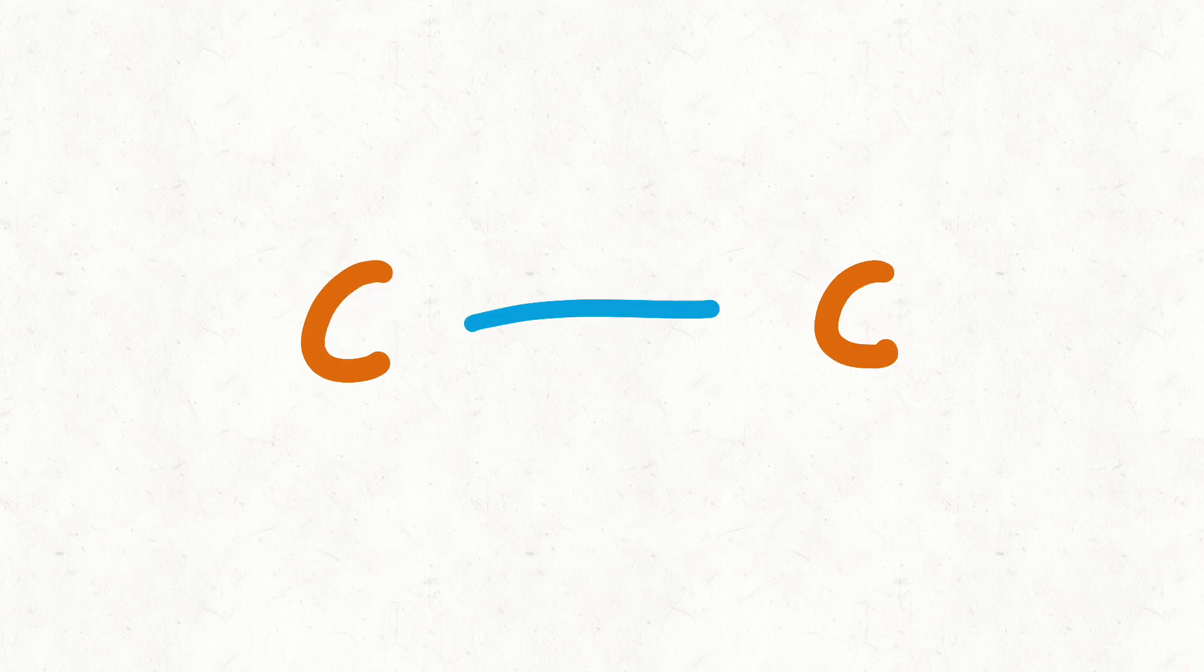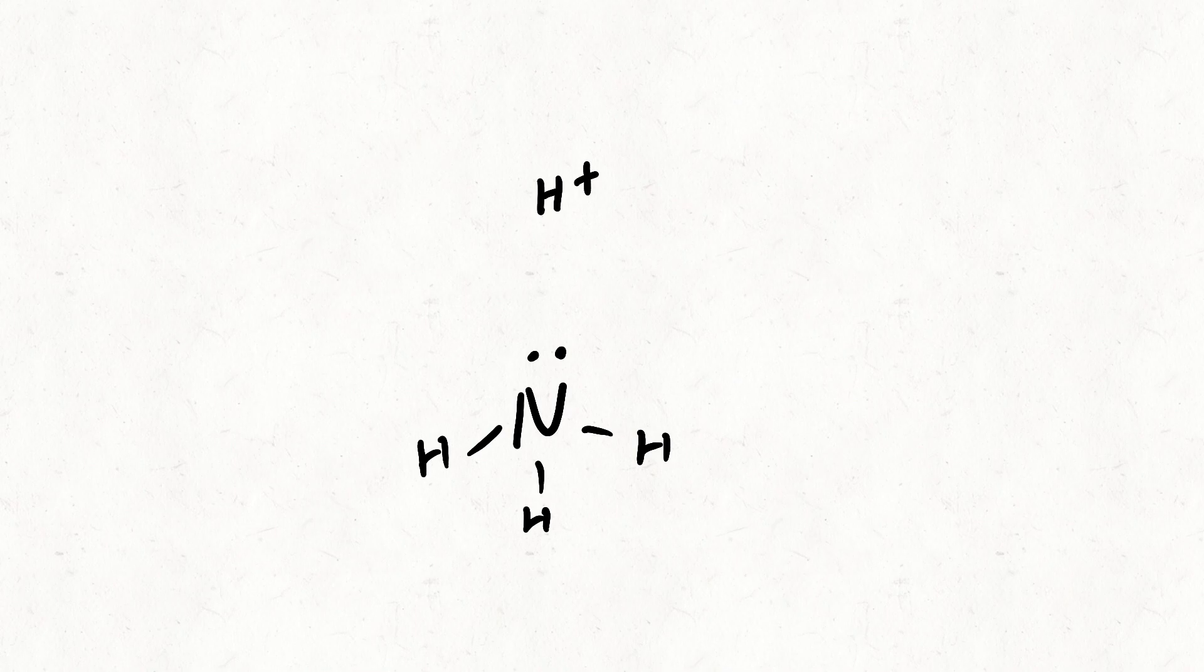A covalent bond is where a pair of electrons are shared between two nuclei. A dative covalent bond is where both electrons come from one atom. This is denoted by an arrow.